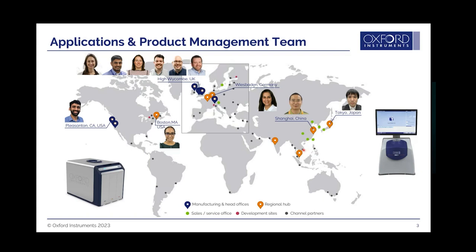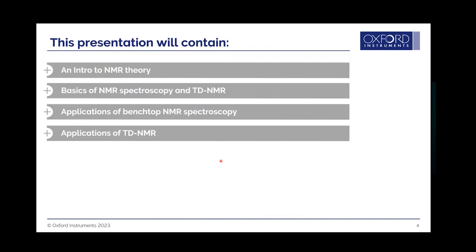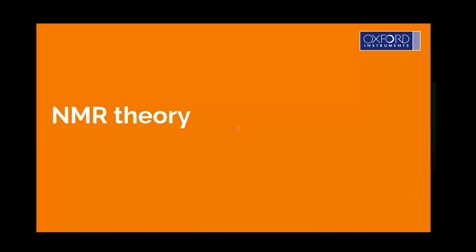In terms of our magnetic resonance capabilities, we have an NMR spectroscopy instrument, the X-Pulse. We also have a time domain NMR instrument, the MQC. If you don't know what these things can do or much about these techniques, that's what we're here to discuss today. I'm going to be talking about some NMR theory, as well as what sort of data you can expect to see from NMR spectroscopy and TD NMR techniques and how you can interpret these pieces of data. Then I'll hand over to my colleagues Shada and Wendy, who will talk about some practical applications.